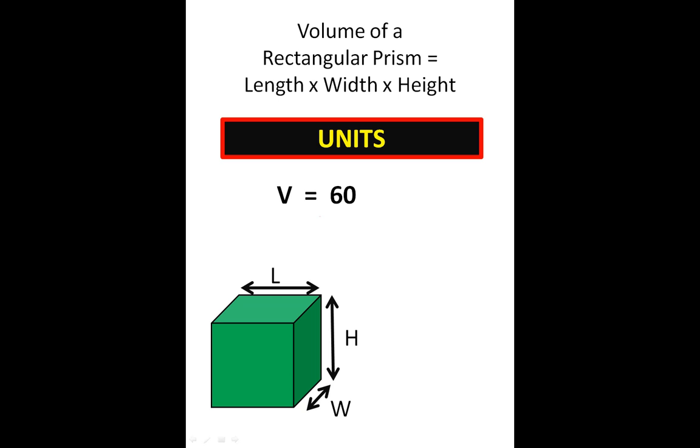And if we look at our units, we know that we are multiplying 3 dimensions, length times width times height. So when we do that, it's going to give us cubic units, cubic inches, feet, or meters, or whatever we're measuring. So that is our units for a rectangular prism. And we can write that as 60 inches to the third cubic inches.